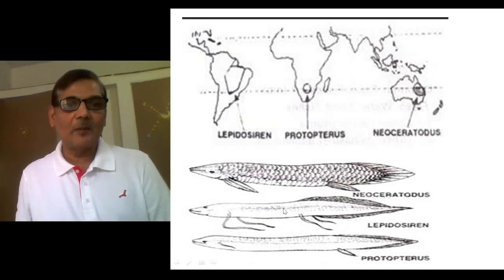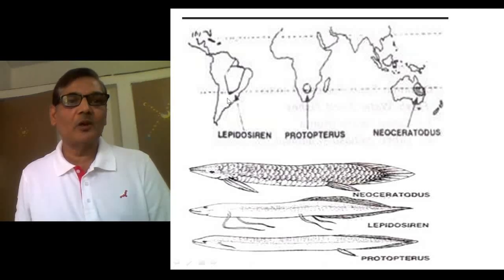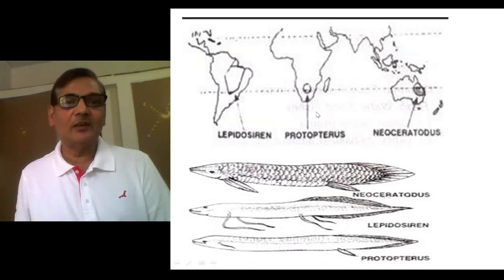These lungfishes share several common features — they have air sacs present in their body that are internally vascular and help in aerial respiration, and they can spend substantial time outside of water. If you see the structure of their limbs and internal anatomy, you find that they might have originated from a single common ancestor. This was possible when their common ancestor was present at one place and moved through freshwater river connections to different continents. Presently, they are represented in three separate, distantly located continents, which helps us understand they are the result of long evolutionary changes.